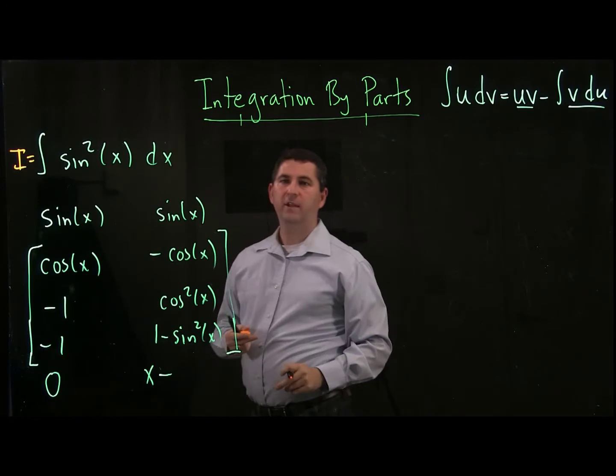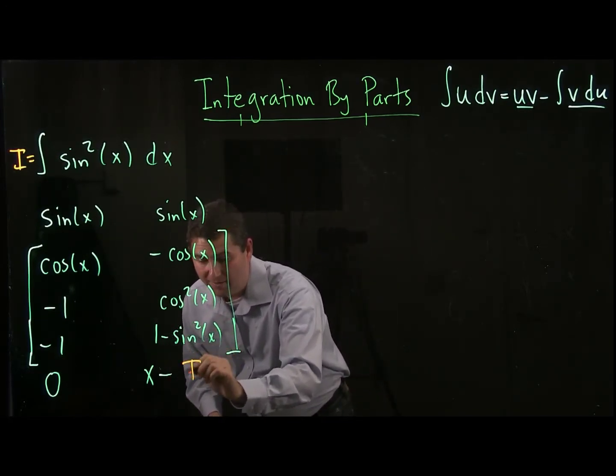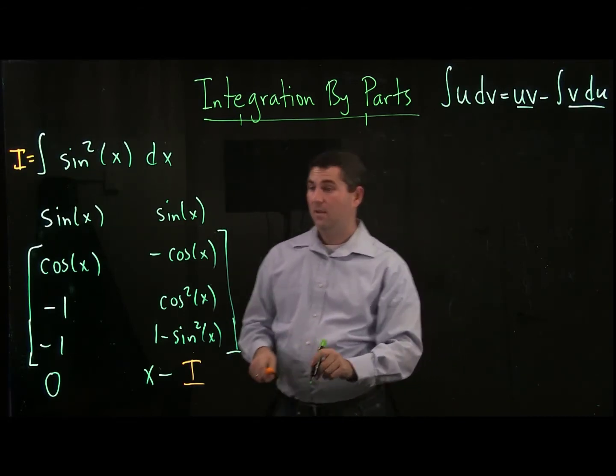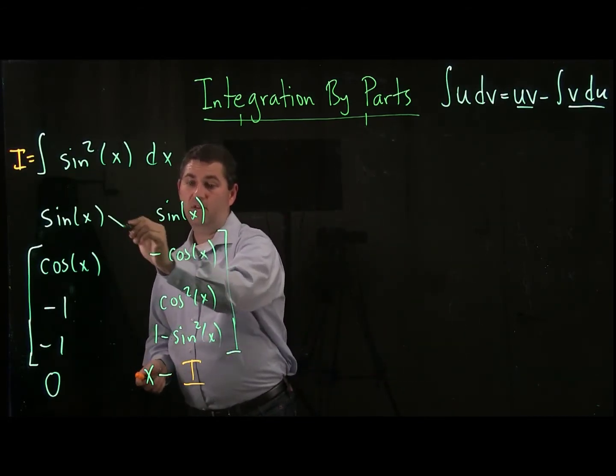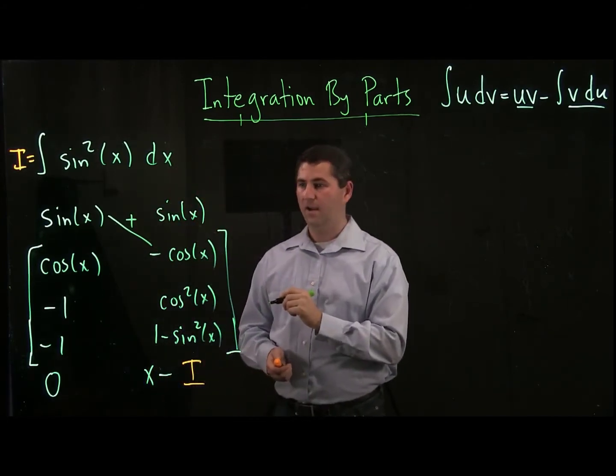But that's where i comes in. If I call my original anti-derivative i, then I know that I'm getting down here the same i. Now I draw my lines in. So sine times negative cosine, which gets a positive sign in front of it.